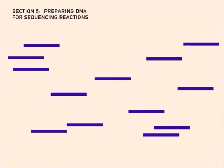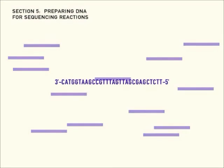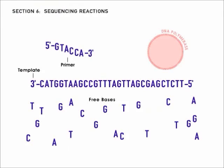A DNA sequencing reaction includes four main ingredients. Template DNA, copied by the E. coli, free bases, the building blocks of DNA that come in four types, short pieces of DNA called primers, and DNA polymerase, the enzyme that copies DNA.